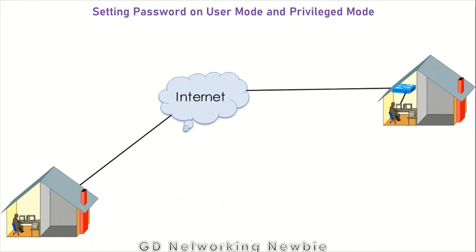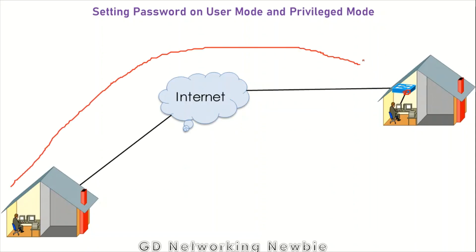So now we have set the password on the switch. Wherever a user is, if they want to access user mode as well as privilege mode, they have to provide the password to access the IOS of the switch — whether through the console port or remotely using Telnet. This was a very important topic in networking and Cisco, and I hope it was clear. We will discuss more in the next video.